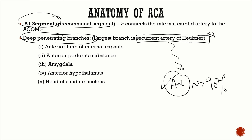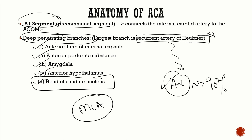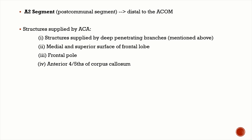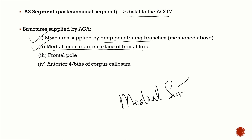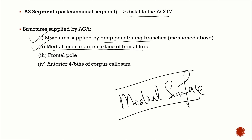These deep penetrating branches supply the anterior limb of the internal capsule, the anterior perforated substance, the amygdala, the anterior hypothalamus, and the head of the caudate nucleus. The remaining part of the caudate nucleus is supplied by the lenticulostriate branches of the MCA. In summary, the ACA supplies: structures via deep penetrating branches, the supramedial strip over the frontal and parietal lobes, the major portion of the medial surface of the frontal and parietal lobes, the frontal pole, and the anterior four-fifths of the corpus callosum.